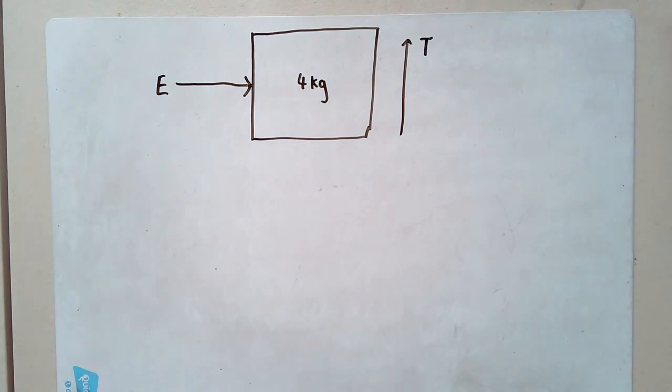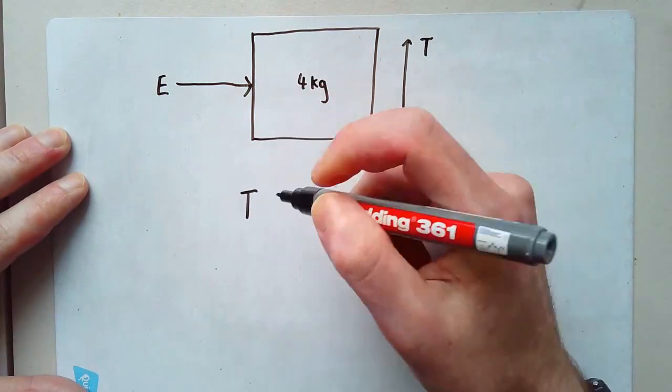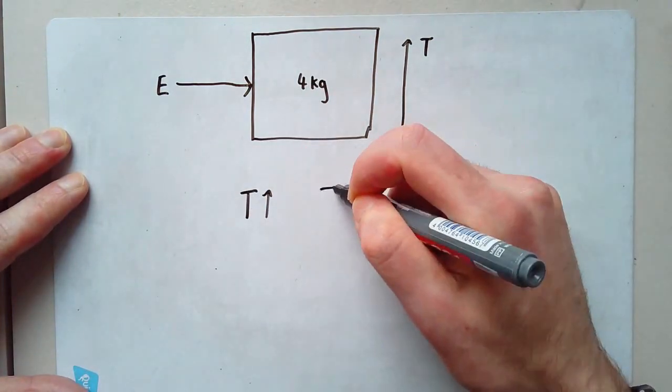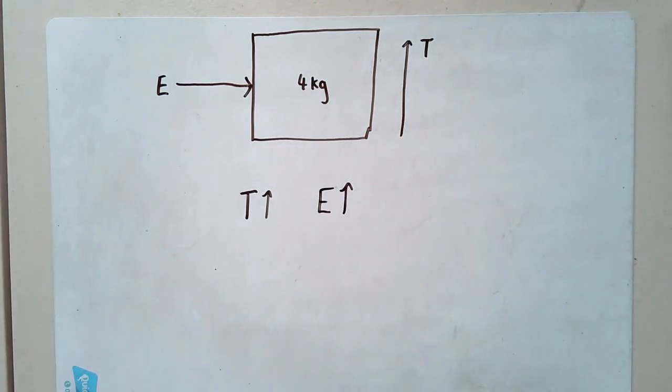Now, obviously, the amount by which the temperature increases depends on a few things. So let's say I want the temperature to go up. Well, the first thing I could do is put in more energy. The more energy that I put in, the higher the temperature goes up.